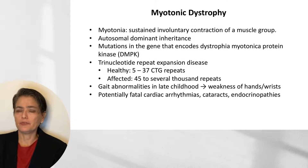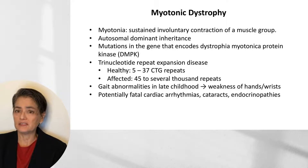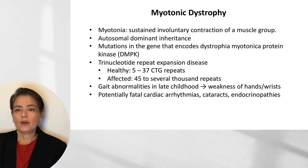Myotonic dystrophy is characterized by sustained involuntary contraction of a muscle group (myotonia). It has autosomal dominant inheritance due to mutations in the gene encoding dystrophia myotonica protein kinase (DMPK). Significantly, this is a trinucleotide repeat expansion disease similar to Huntington disease — healthy individuals have 5 to 37 CTG repeats, while affected individuals have 45 to several thousand. Patients typically present with gait abnormalities in late childhood, progressing to weakness of the intrinsic muscles of the hands and wrists. Other findings include potentially fatal cardiac arrhythmias, cataracts, and a variety of endocrinopathies.